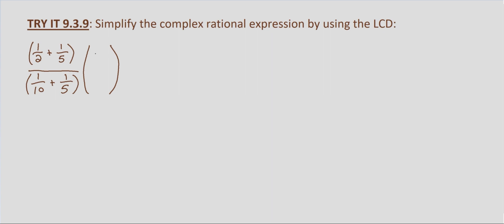We just distribute as we normally would. This equals 10 times 1/2, which is 5; 10 times 1/5, which is 2. Then in the denominator, 10 times 1/10 is 1, plus 10 times 1/5 is 2.